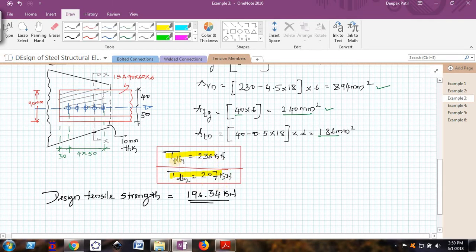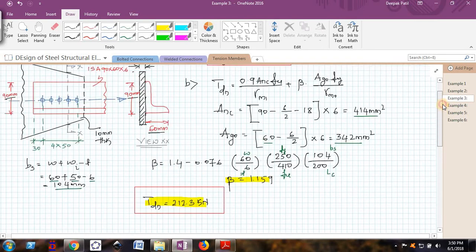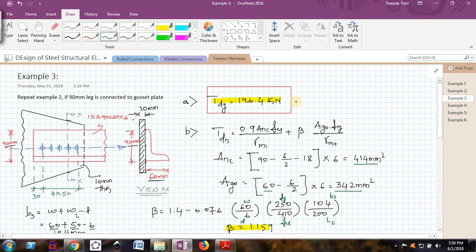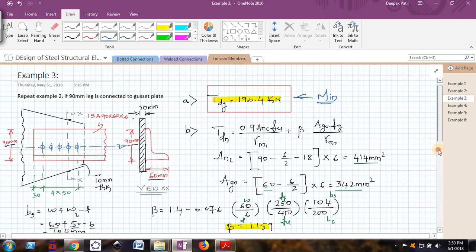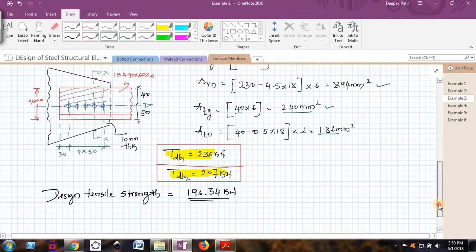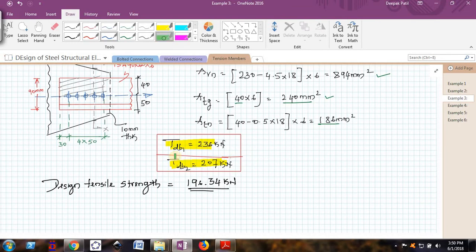By looking into all those values for TDG, TDN, TDB1 and TDB2, the minimum is actually TDB2. This is the minimum value. I am stating that the design tensile strength of the angle in this case is 196.34 kilo Newton.